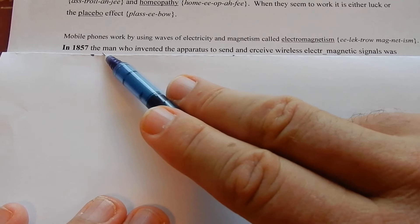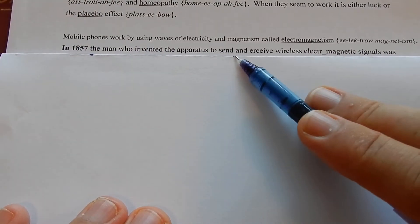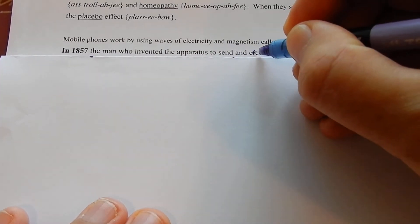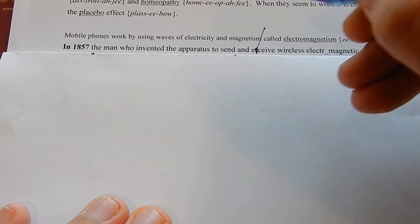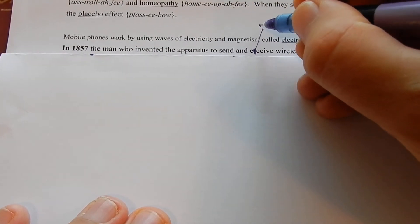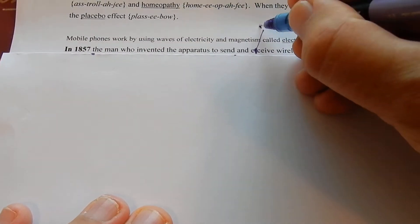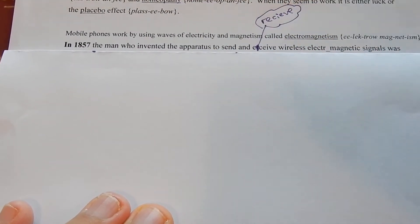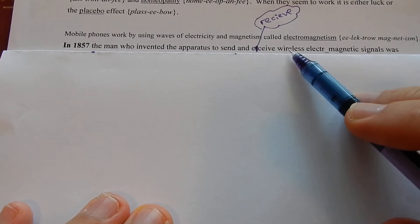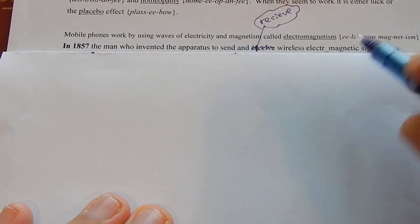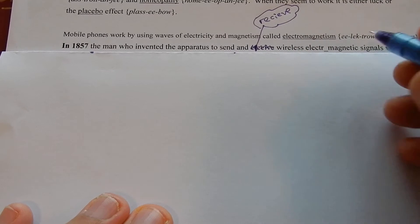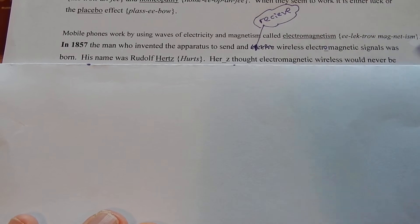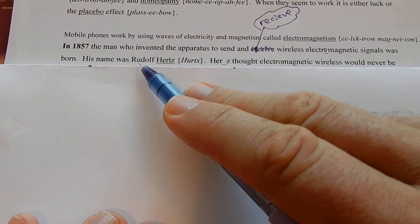In 1857, the man who invented the apparatus to send and receive wireless electromagnetic signals was born. His name was Rudolf Hertz.